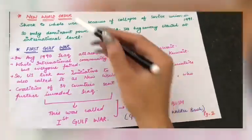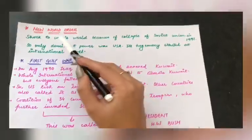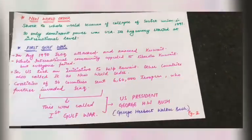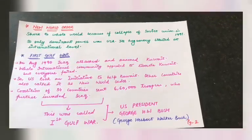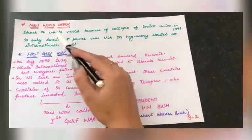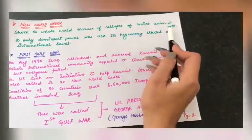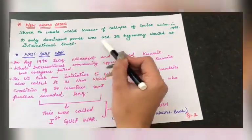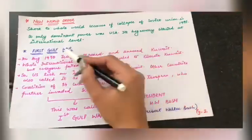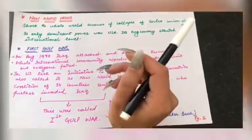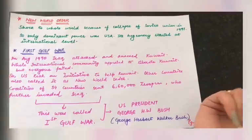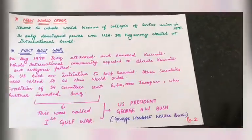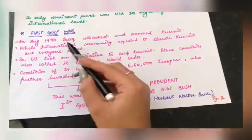I am explaining this chapter with a very detailed description. You may note the points from here and make your notes; the chapter will be properly clear to you. Regarding the new world order: the whole world got a shock because of the collapse of the Soviet Union in 1991. After socialism converted to capitalism and the Soviet Union collapsed, no other dominant power remained and the USA's hegemony started at an international level. In this chapter, we'll discuss some basic wars and operations.